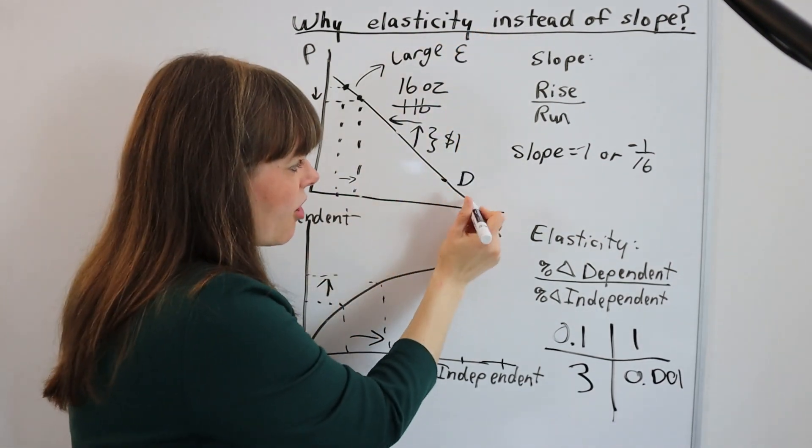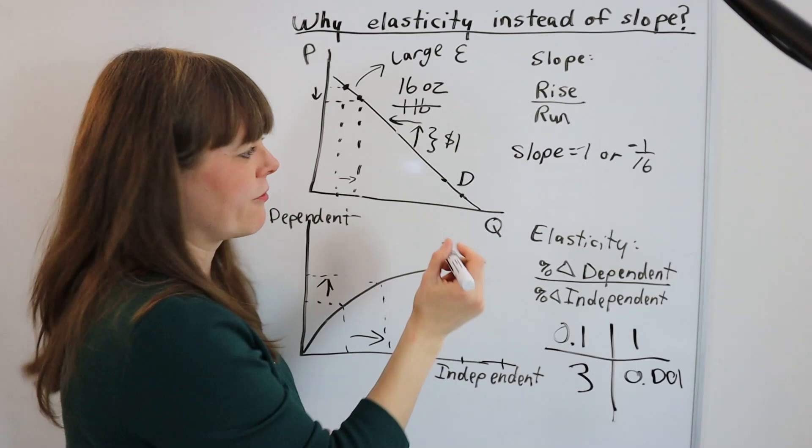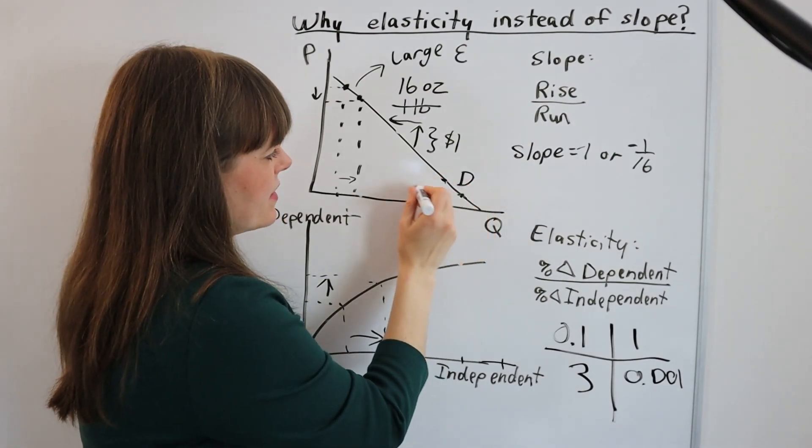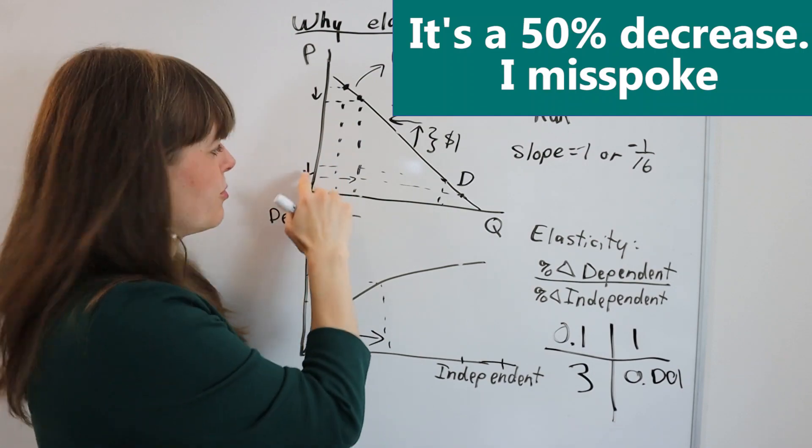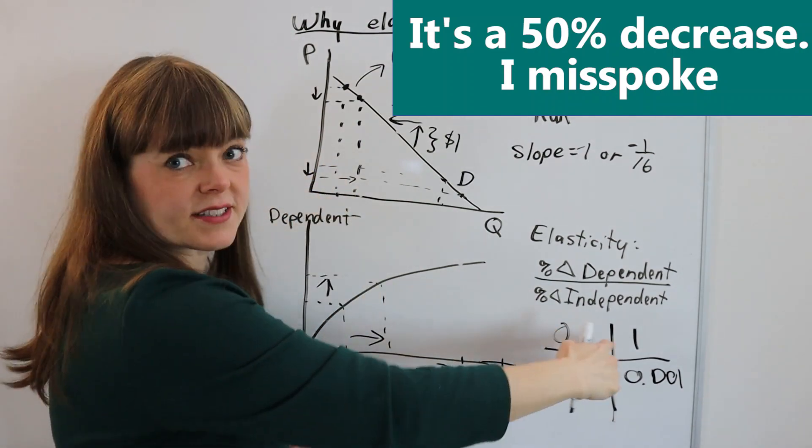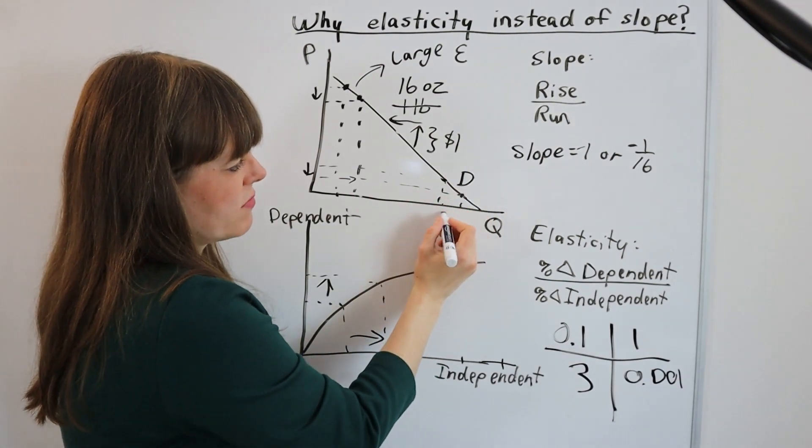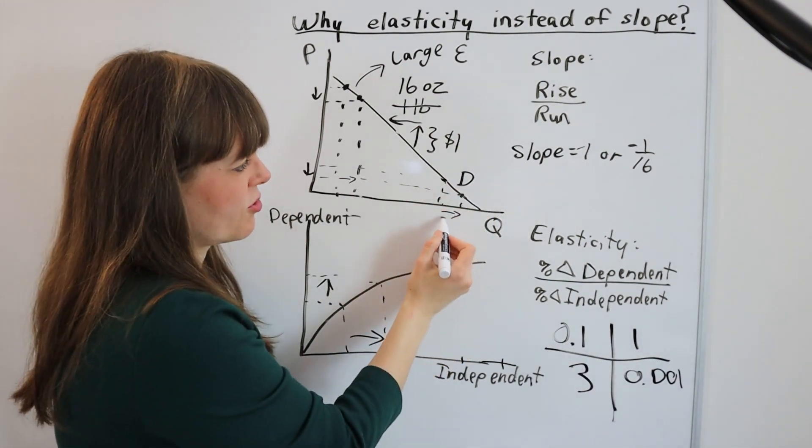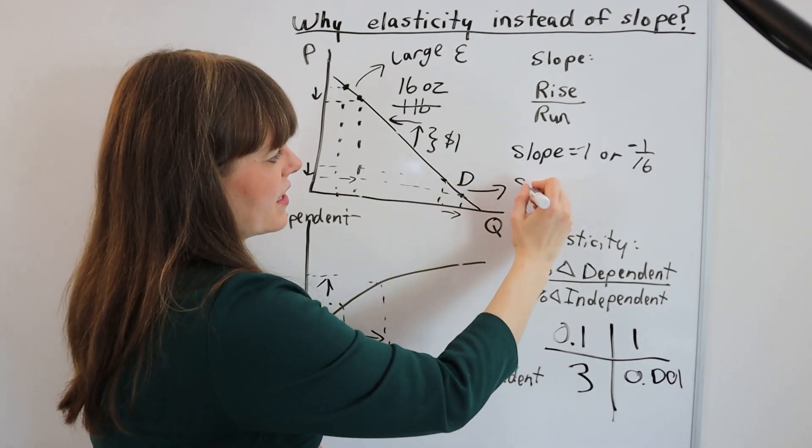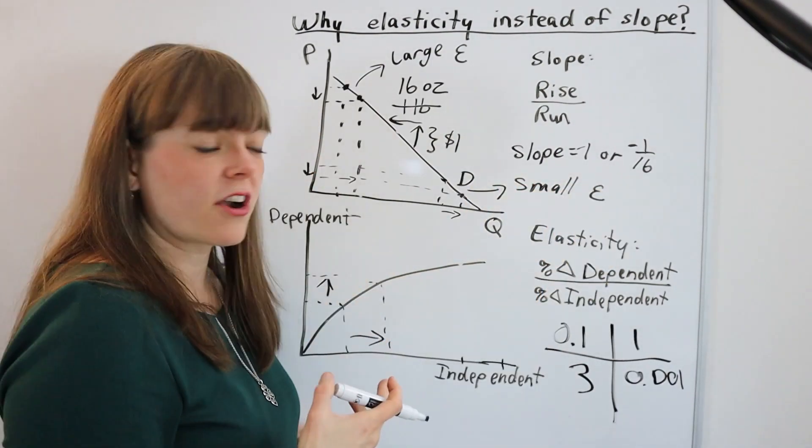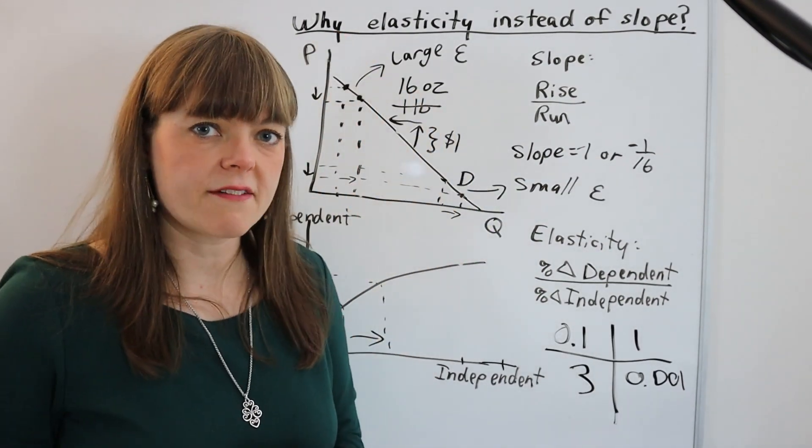Whereas down here on this linear line, the slope is the same, but you actually have the reverse is true. Like you have, basically, if you capture between these two points, you have a 100% decrease in price. Price is the independent variable, that's the denominator, and probably a 10% increase in quantity. So that's going to be a small elasticity down here just because the percent changes are different on these two different points in the graph.